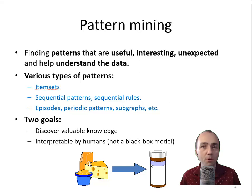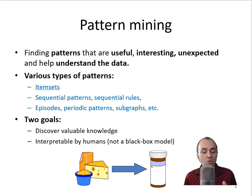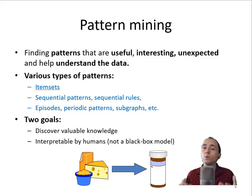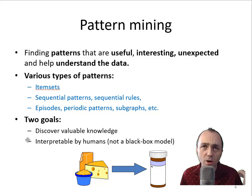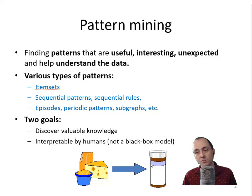Here I will show you some examples. If we look at shopping data — what people buy online — maybe we find that some people buy cheese, noodles, and other products together with some medicine or other things. If we find such patterns about what people buy together, then maybe we can do some promotion or sell them together. This is something we can easily understand. Our goal with pattern mining is to discover valuable knowledge that is interpretable by humans — not a black box.